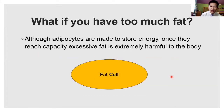So what happens when you have too much fat though? You can think of your fat cell almost like a closet. Your closet and your fat cells are both made to store stuff - your closet stores clothes, and your fat cells store fat, but both of these have a limited capacity.